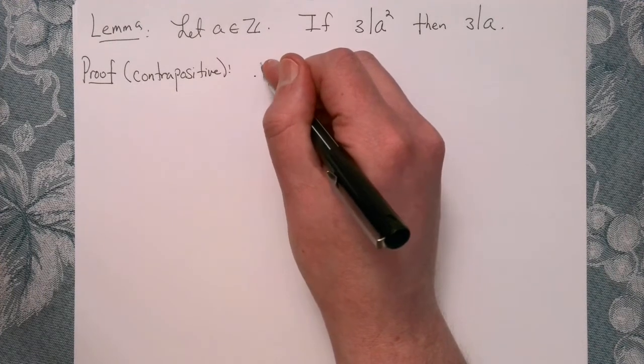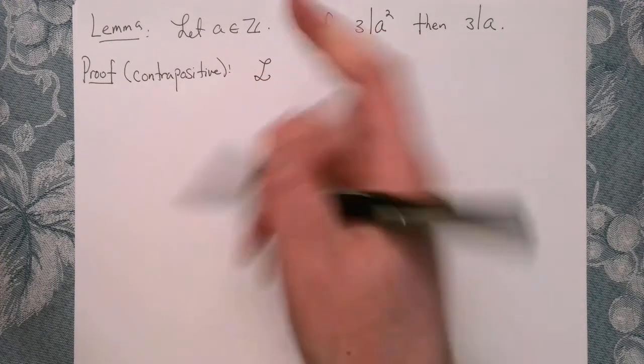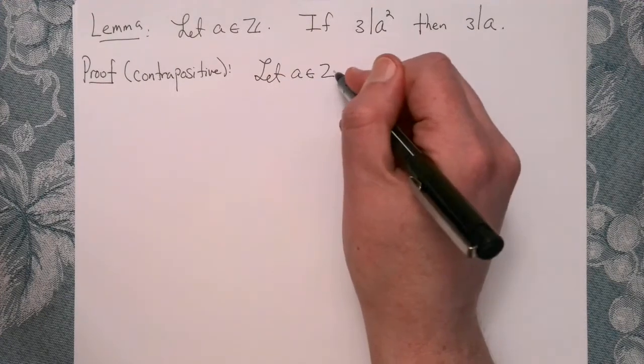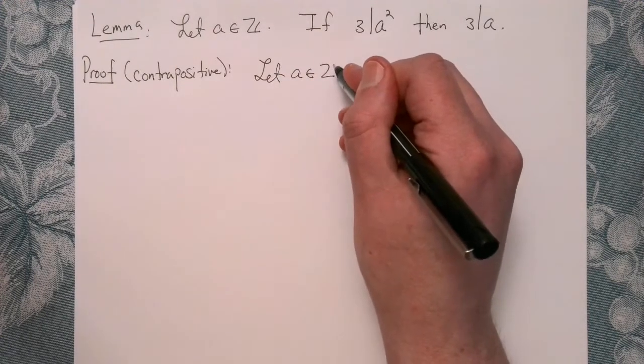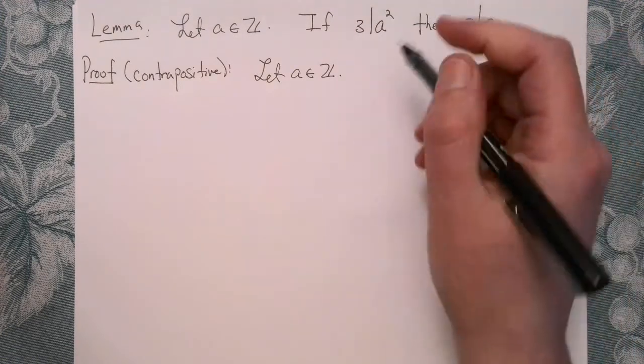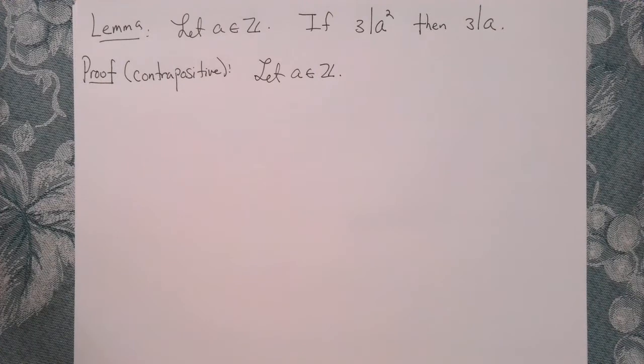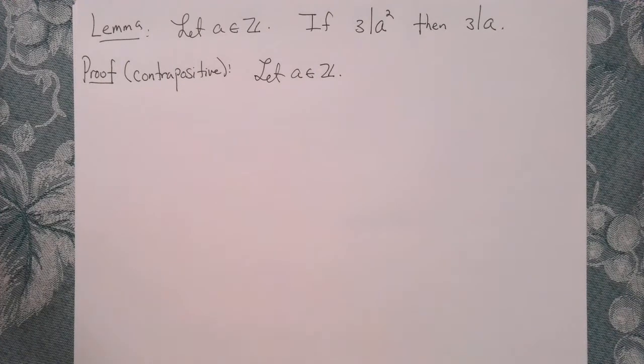So let's assume... Actually, let's just quickly note that A is an integer, just for the sake of completeness with our proof. Okay, so now we'll assume not Q. So assume that 3 does not divide A. And then we'll think about what does it mean for 3 not to divide A.